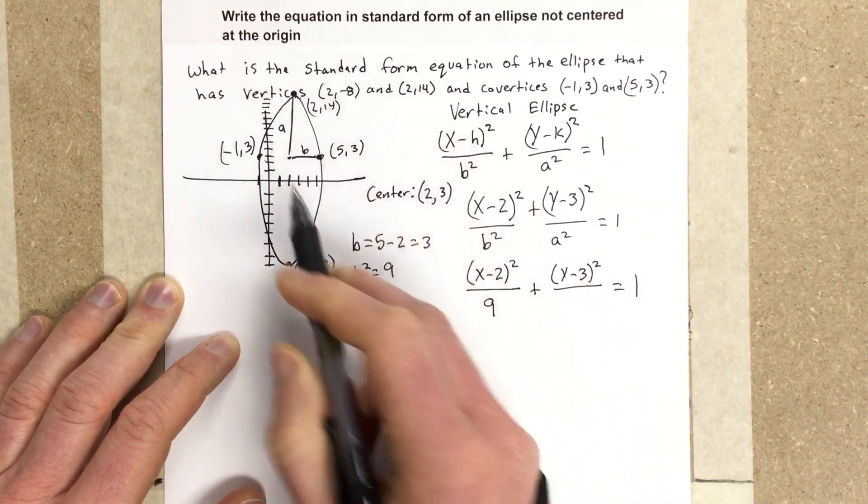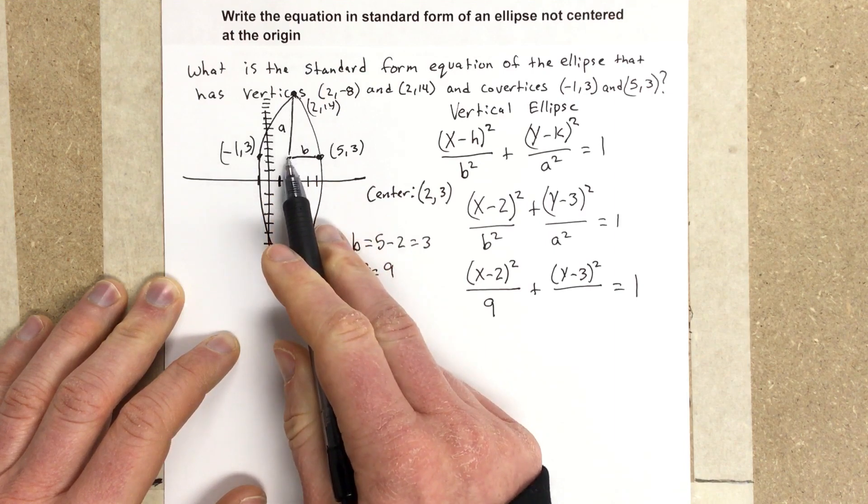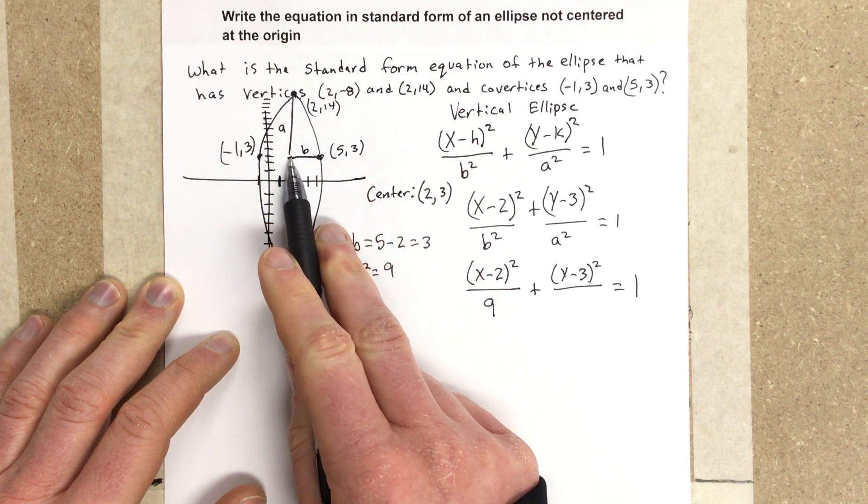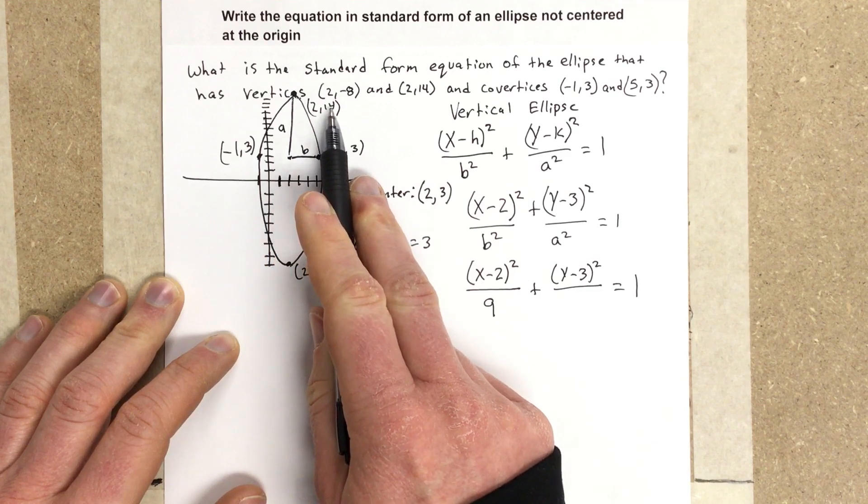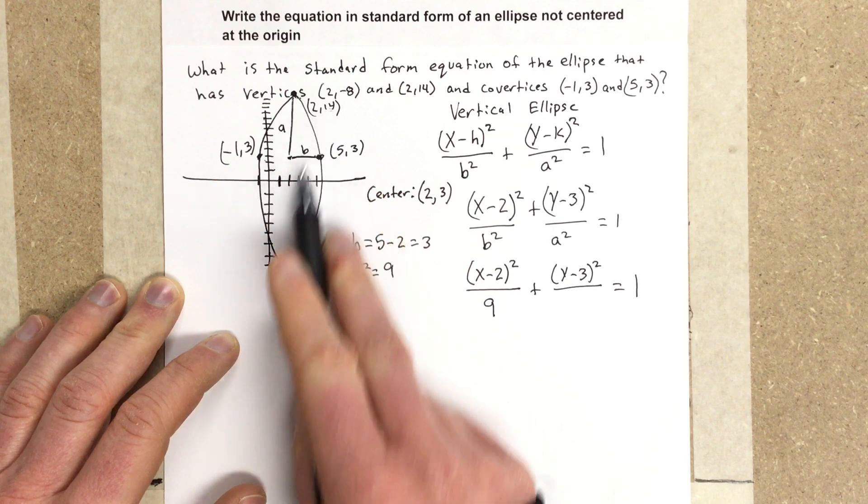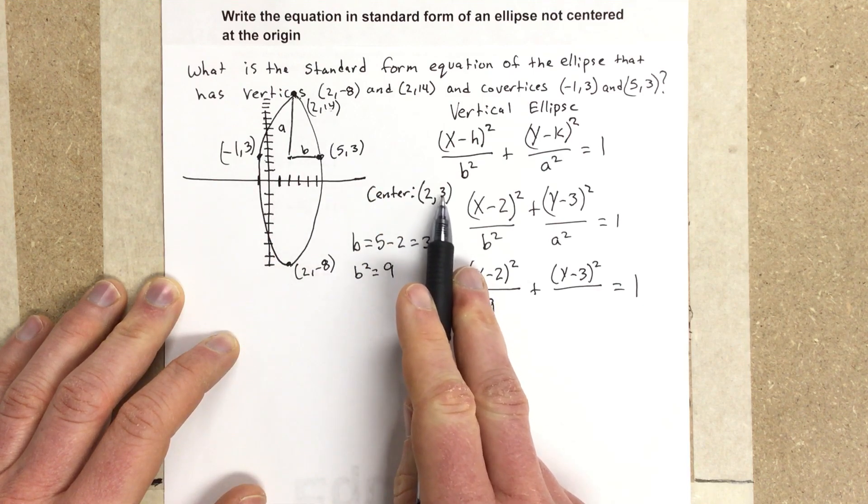So a is going to be the distance from one of our vertices to the center. In this case, it's going to be the y-values that need to be subtracted. So I have 14, and I'm going to be subtracting out the y-value for the center, which is 3.